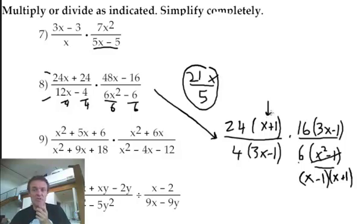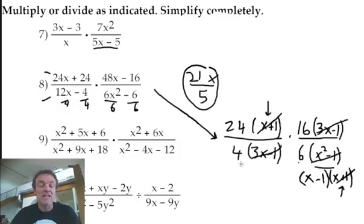This x plus 1 on the bottom? I'm going to start crossing stuff off right now. Now, that's gone and that's gone. The 3x minus 1 is gone. The 3x minus 1 is gone. Okay, now, you can do all sorts of different ways of doing this. I mean, if I just do this right now, 24 divided by 4 is 6. Okay? Now watch. There's a 6 on the top. There's a 6 on the bottom.